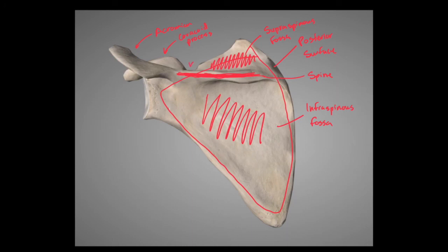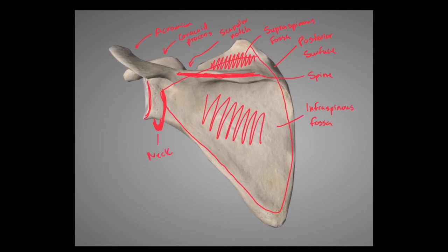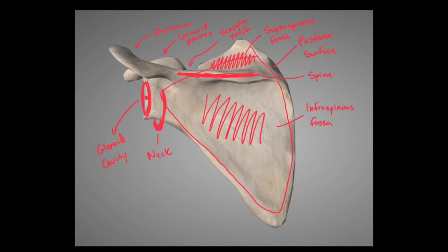Right here you can see a notch — also visible on the anterior surface — called the scapular notch of the scapula. Right here there is a narrowing or thinning of the bone called the neck of the scapula. And where the lateral angle of the scapula is, there is a depression called the glenoid cavity of the scapula — this is a rule-breaker since it's a depression but is not called a fossa. Those are all the landmarks for the scapula.